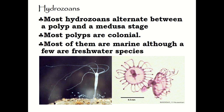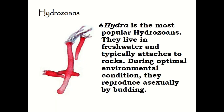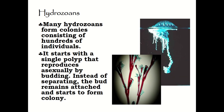Most hydrozoan cnidarians alternate between a polyp and medusa stage; the polyps are colonial and most are marine, with some freshwater. Hydra is the most popular example of a hydrozoan — they live in freshwater and are typically attached to rocks. During optimal environmental conditions they reproduce asexually by budding. Many hydrozoans form colonies consisting of hundreds of individuals, starting with a single polyp that reproduces asexually by budding; instead of separating, the buds remain attached and form a colony.